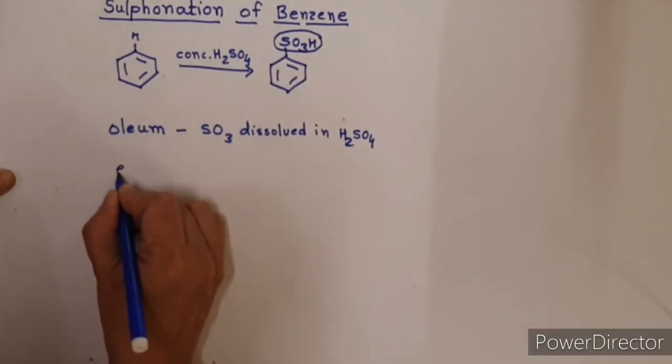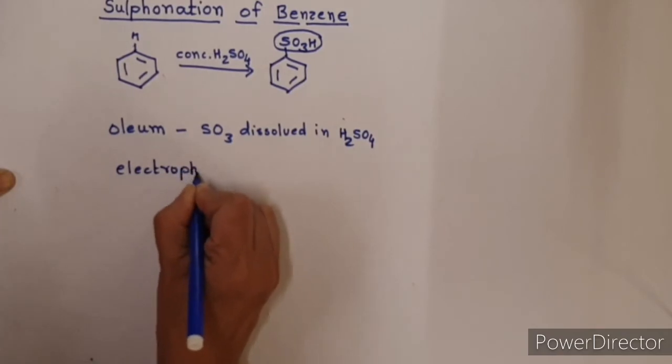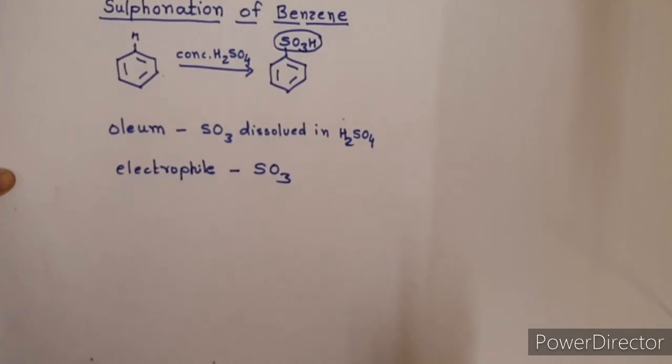The electrophile generated in the process is SO3. Remember, I am saying SO3 and not SO3+. Now, the problem is the electrophile should be positively charged, but here SO3 is neutral. Then how can it act as an electrophile? I will tell you the answer while discussing the mechanism.